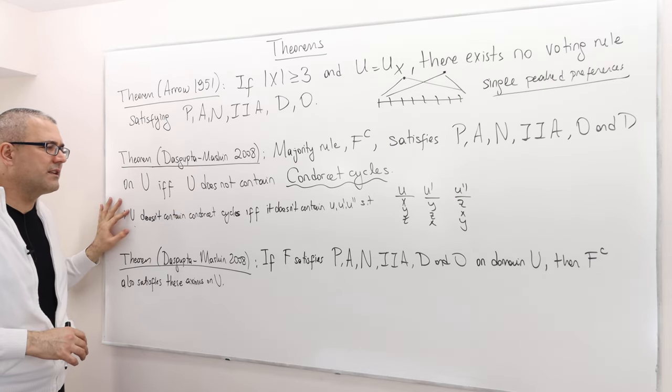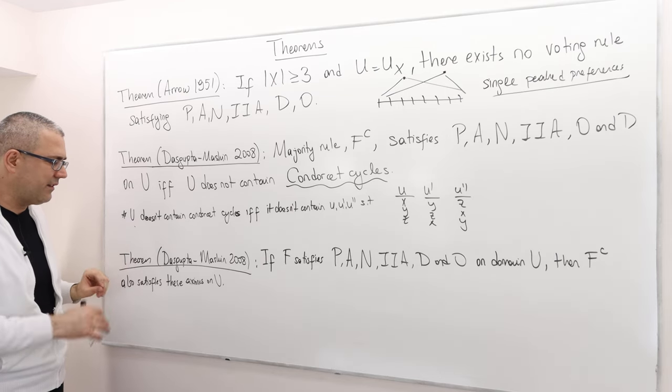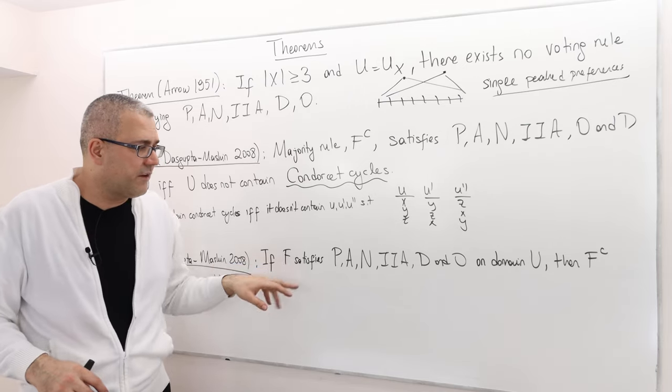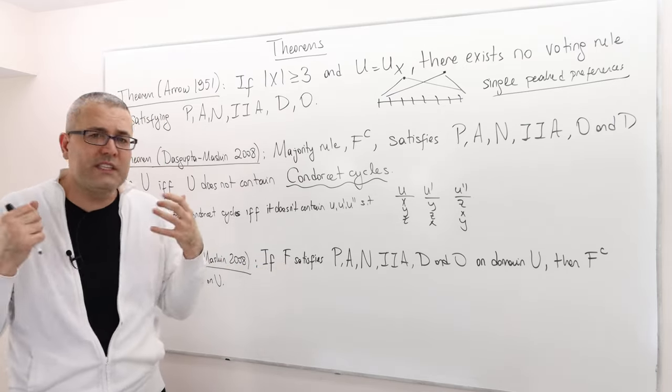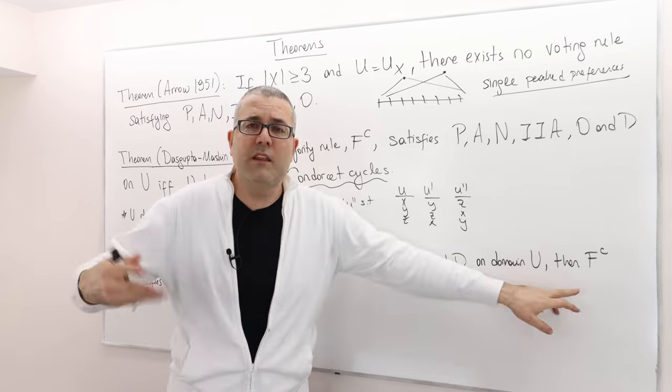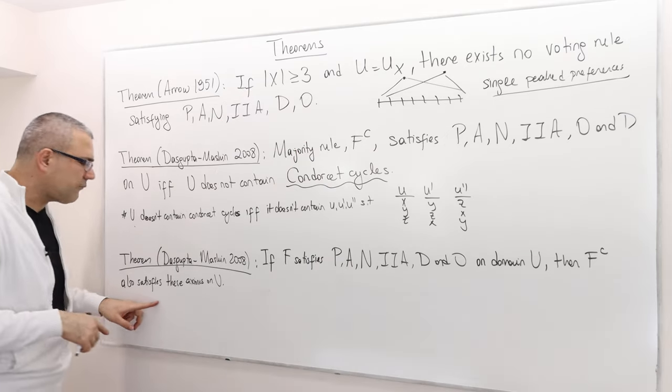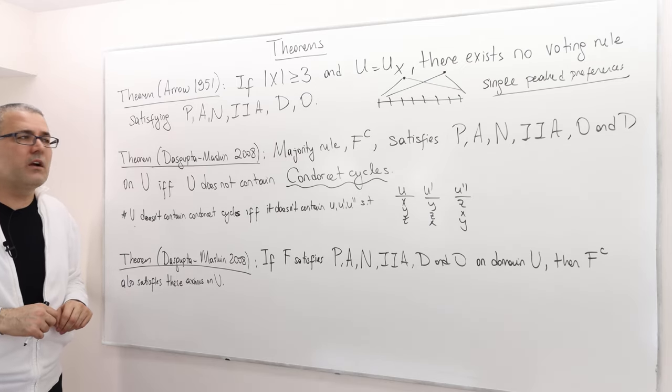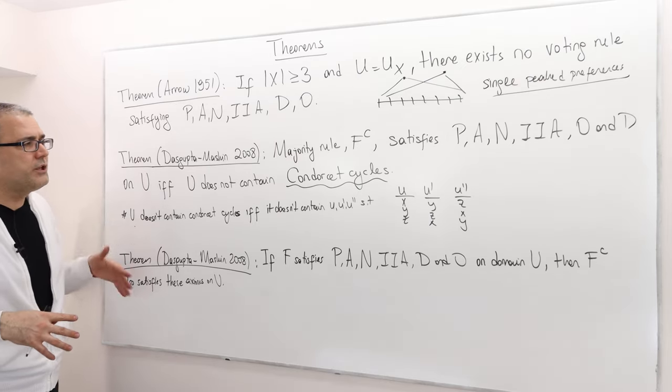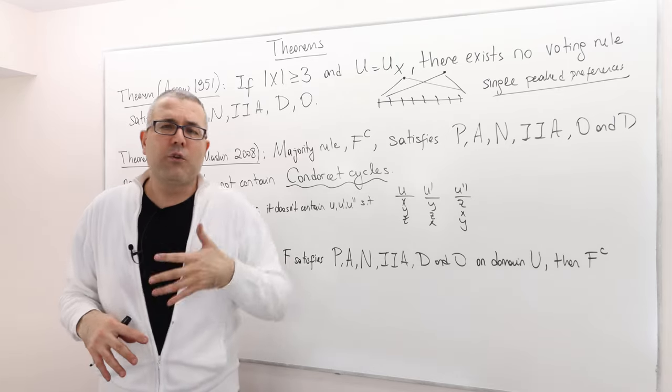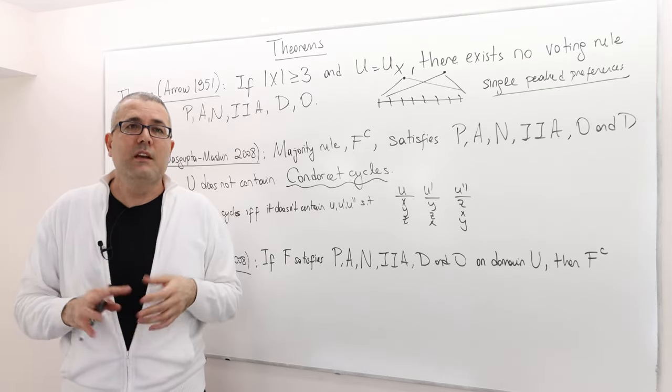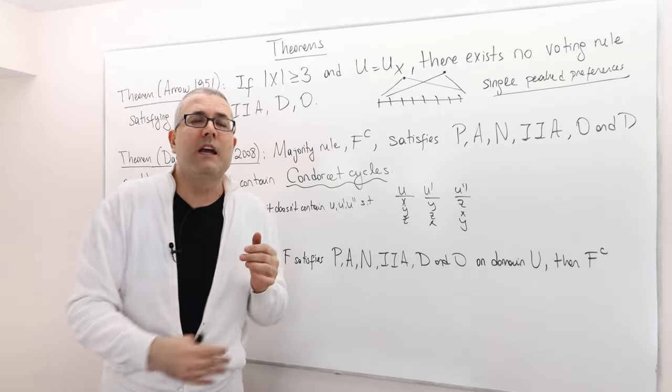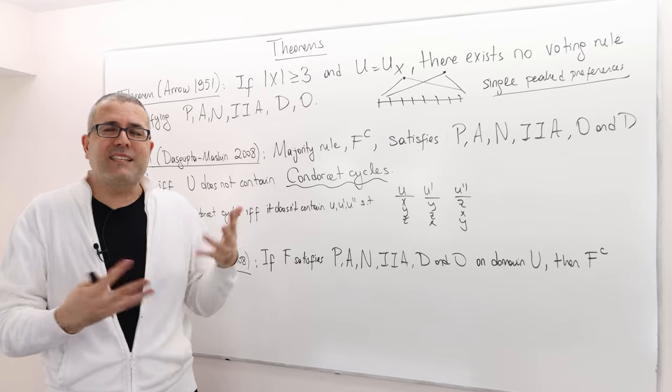The second theorem says if a voting rule F satisfies all our six axioms on some domain U, then the majority rule also satisfies those axioms. In that sense, those two theorems say that the majority rule is in some way a better rule than all the other rules.